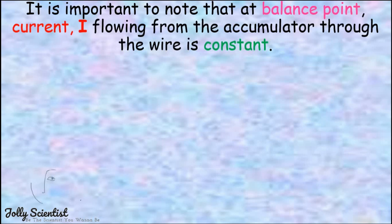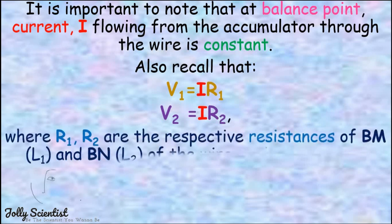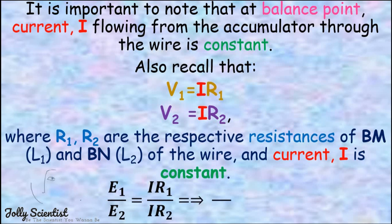Repeating with a cell of E2, a balance point at BN is obtained. The relation E1 divided by E2 equals V1 divided by V2 is applied. It is important to know that the current I flowing through the wire from the accumulator is constant. Recall that V1 equals I times R1 and V2 equals I times R2, where R1 and R2 are the respective resistances of BM and BN. Canceling I, we get E1 divided by E2 equals R1 divided by R2.